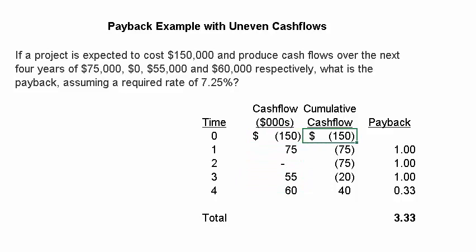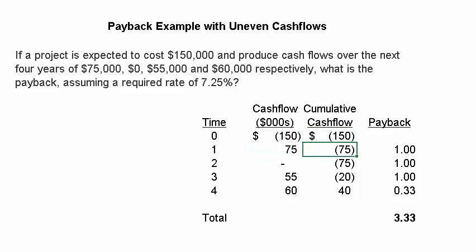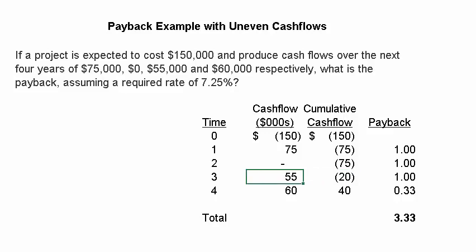So we have to compute the cumulative cash flows. At point zero, we're $150,000 in the hole. Then we add the $75,000 positive cash flow from year one to generate a cumulative cash flow of negative $75,000 — that's $150,000 less $75,000. At the end of year two, there's no impact because there was no cash flow. At the end of year three, that $75,000 deficit is reduced by $55,000, and then finally we go positive.